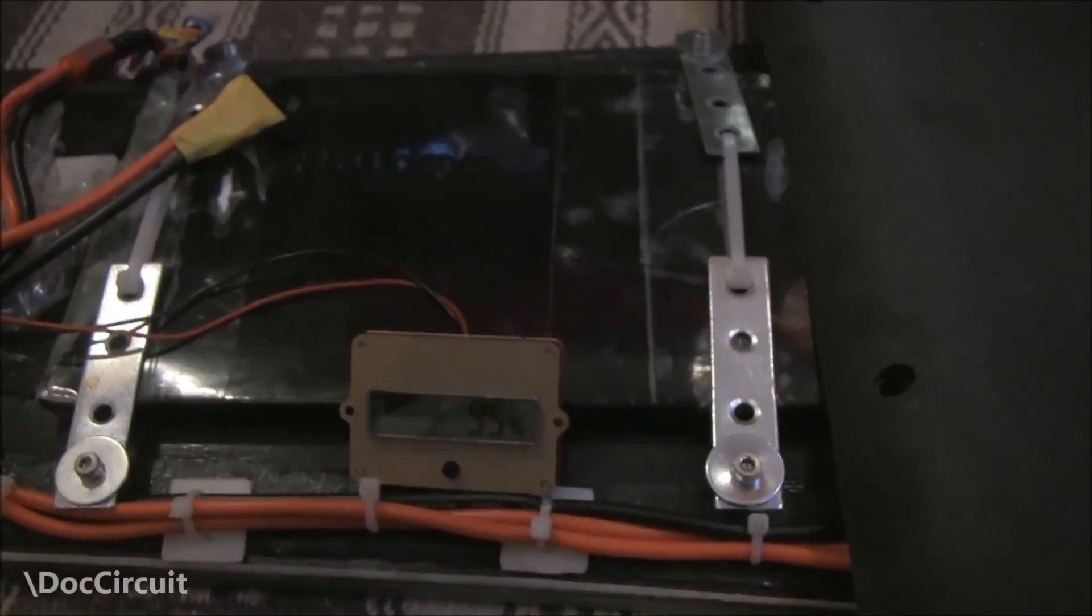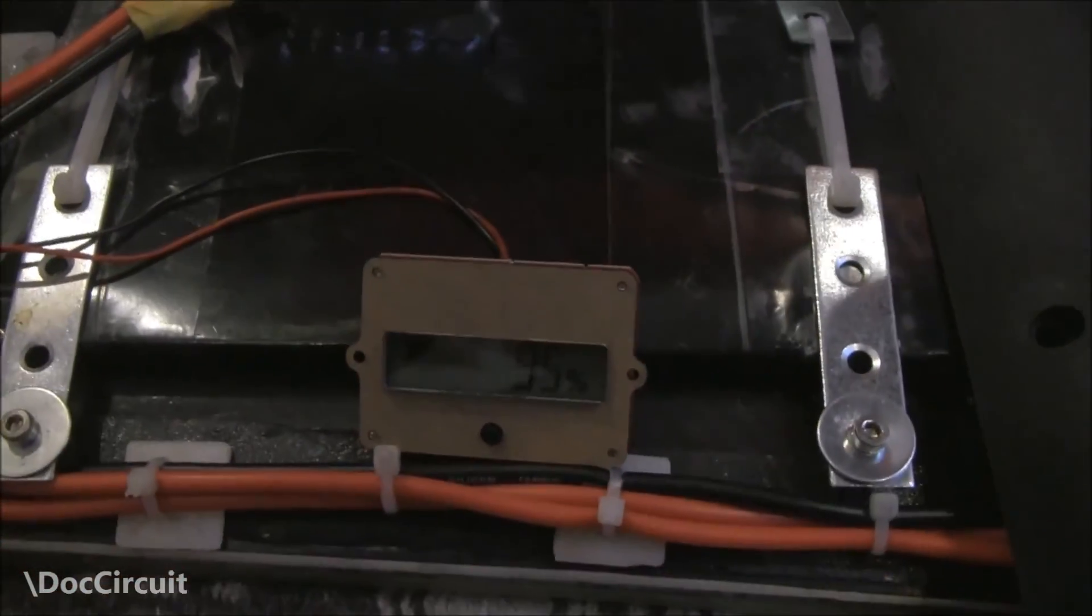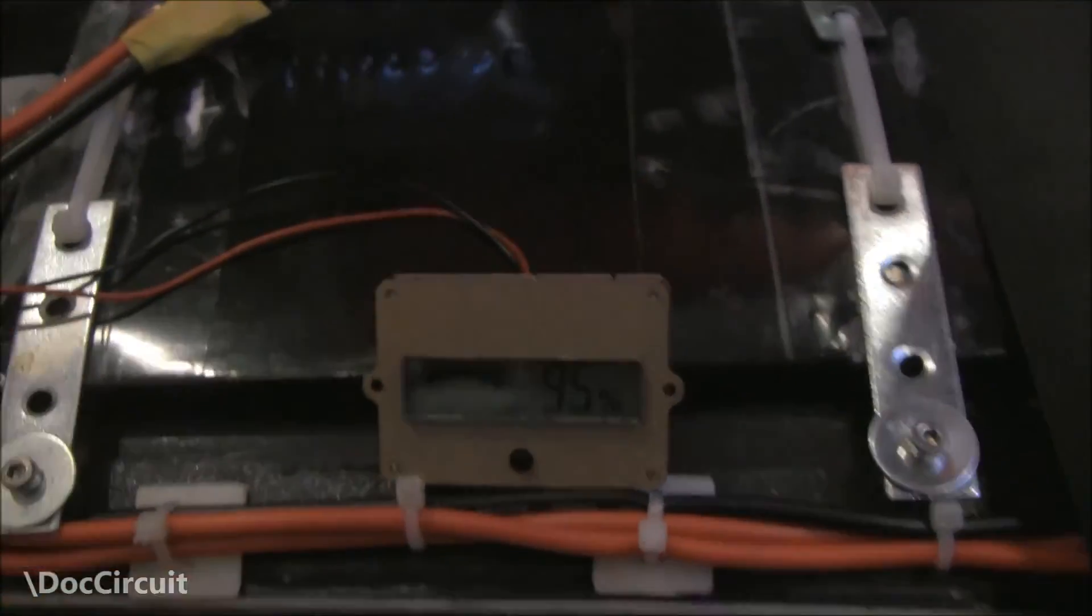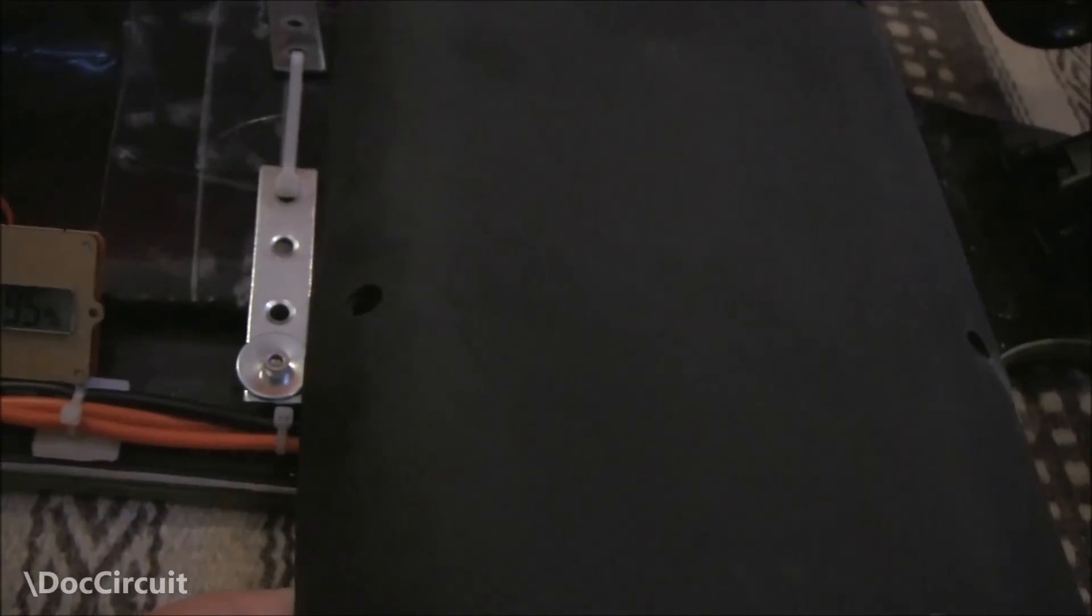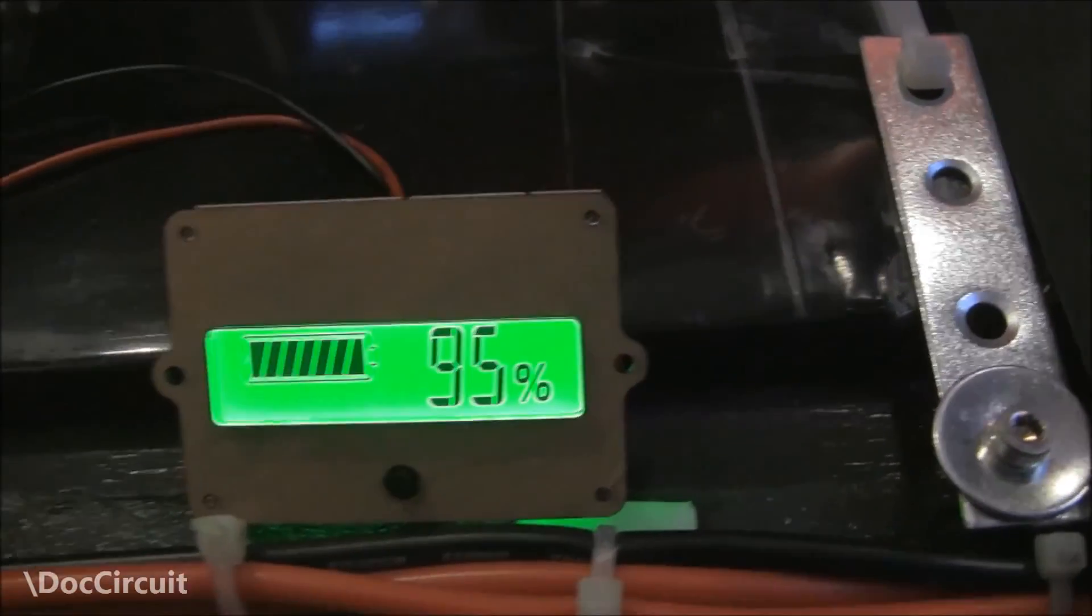So yeah, I would Dremel a square hole, mount that from the inside, and have nuts and bolts go through there. One thing to keep in mind, if you do mount that behind the casing, do drill a hole to reveal that button. Because that's the white button.